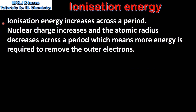Next we look at the reasons for these trends. Ionization energy increases across a period because the nuclear charge increases and the atomic radius decreases across a period, which means more energy is required to remove the outer electrons.